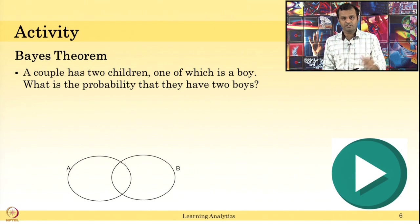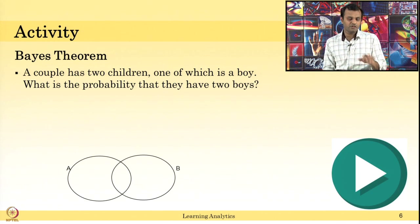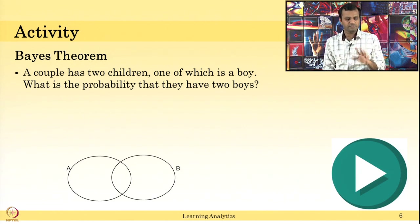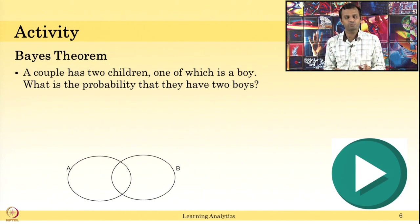Now, this particular question can also be solved without using Bayes theorem, but I want to apply Bayes theorem to it. Consider a couple has two children, they are not twins, one of which is a boy — what is the probability that they have two boys? They have two children — boys or girls, anything possible: boy-boy, boy-girl, girl-boy, girl-girl. Consider one of which is a boy — the first child is a boy — what is the probability that they have two boys, that the second child is also a boy?